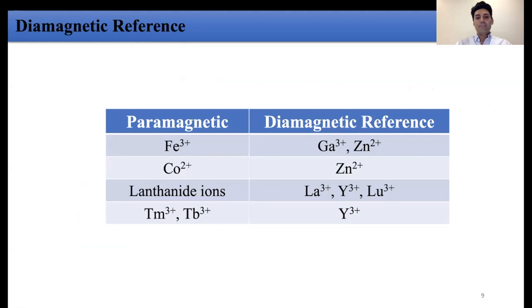To make any paramagnetic NMR measurements meaningful, an appropriate diamagnetic reference is necessary. As mentioned earlier, PREs, PCSs, and RDCs are all calculated by comparing the chemical shifts of a paramagnetic sample and a diamagnetic reference. Now that we know about paramagnetic metal ions, we need the best diamagnetic counterparts. For example, for iron we can use gallium and zinc; for cobalt we can use zinc; and for lanthanide ions there are several options. For the most common lanthanide ions used for PCS measurements, yttrium can be used as the diamagnetic reference.